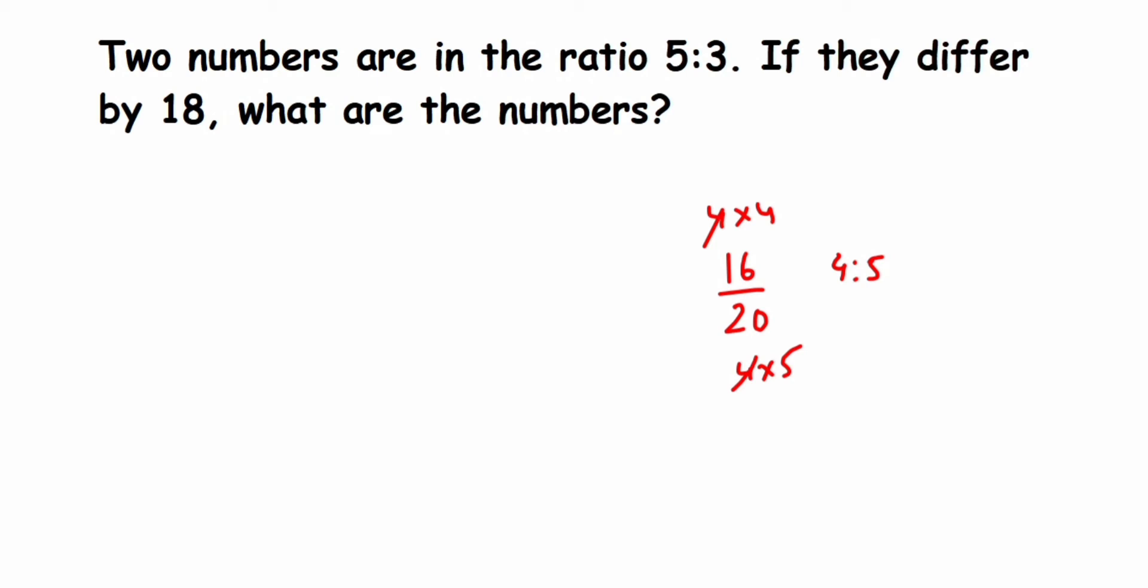Here also, 5:3 is the reduced form of certain numbers. We don't know what we cancelled, so I'm going to take a variable x. Like in the example four was the common factor, here we take x as the common factor. So we take the numbers as 5x and 3x. That's why the variable is assumed whenever ratios are given.